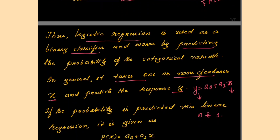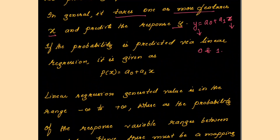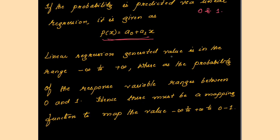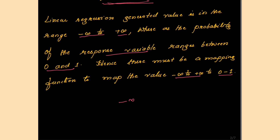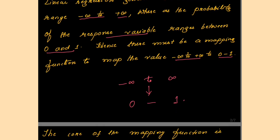So we say it gives the output using probability. Linear regression generates values in the range of minus infinity to plus infinity, whereas the probability of the response variable ranges between 0 and 1. Hence there must be a mapping function to map values from minus infinity to plus infinity to the range 0 to 1.